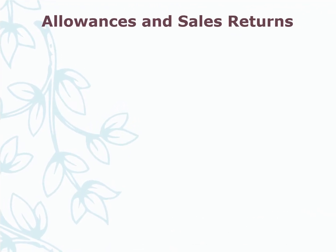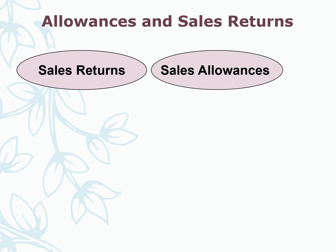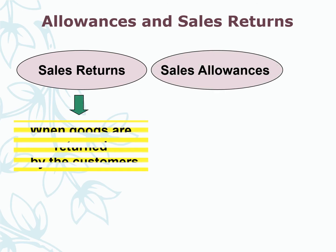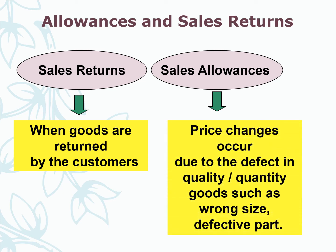Allowances and sales return. The same applies to sales return and sales allowances. Sales return is when goods are returned by the customers, while a sales allowance means a price change occurs due to a defect in quality or quantity, such as wrong size or defective parts.